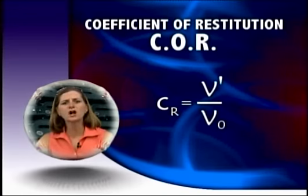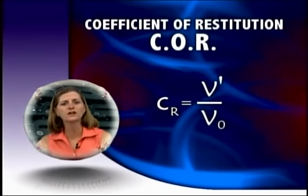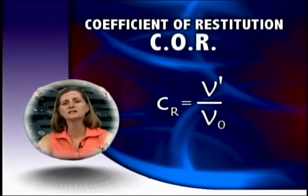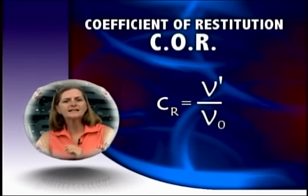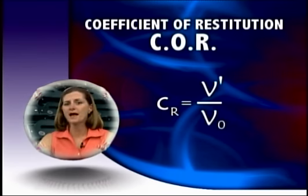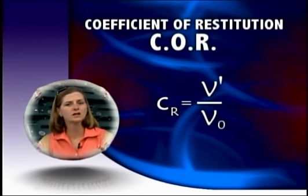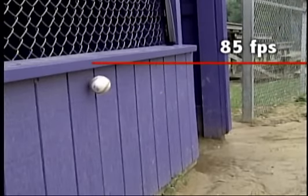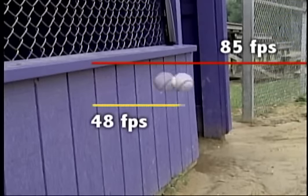Scientists use a concept called the coefficient of restitution, or COR, to measure how much energy is lost in the collision. Technically, the COR is the ratio of the velocity of the ball rebounding from a solid surface to its incident velocity. Picture this: a baseball flying at 85 feet per second that strikes a solid wall rebounds with a speed around 48 feet per second. Around 65 percent of the original energy is turned into non-mechanical energy, or heat, during the collision with the wall.